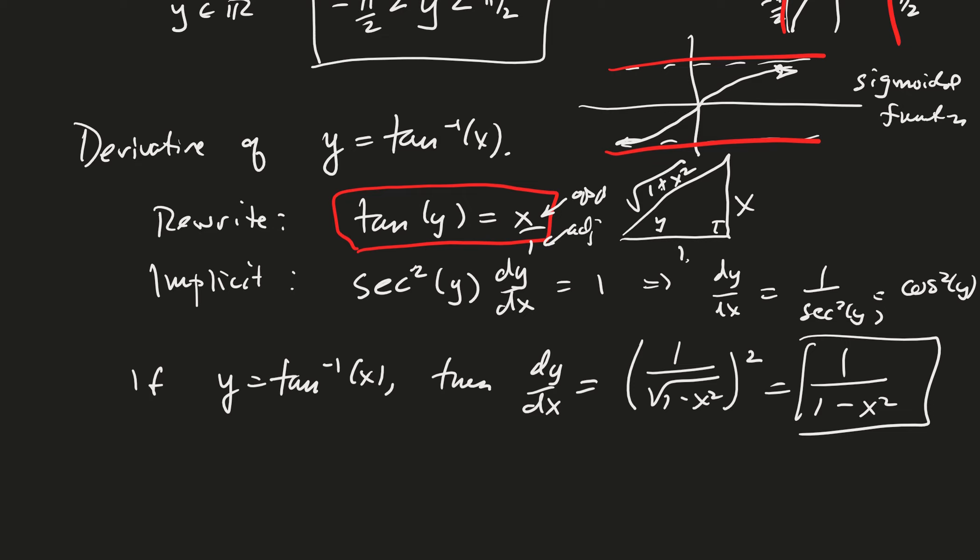That's how we differentiate the inverse trig functions. The book covers all of them, but you should know how to do this for all trig functions. I'd recommend memorizing the inverse sine and inverse tangent derivatives, and being able to compute the others as needed. That wraps up section 3.5.